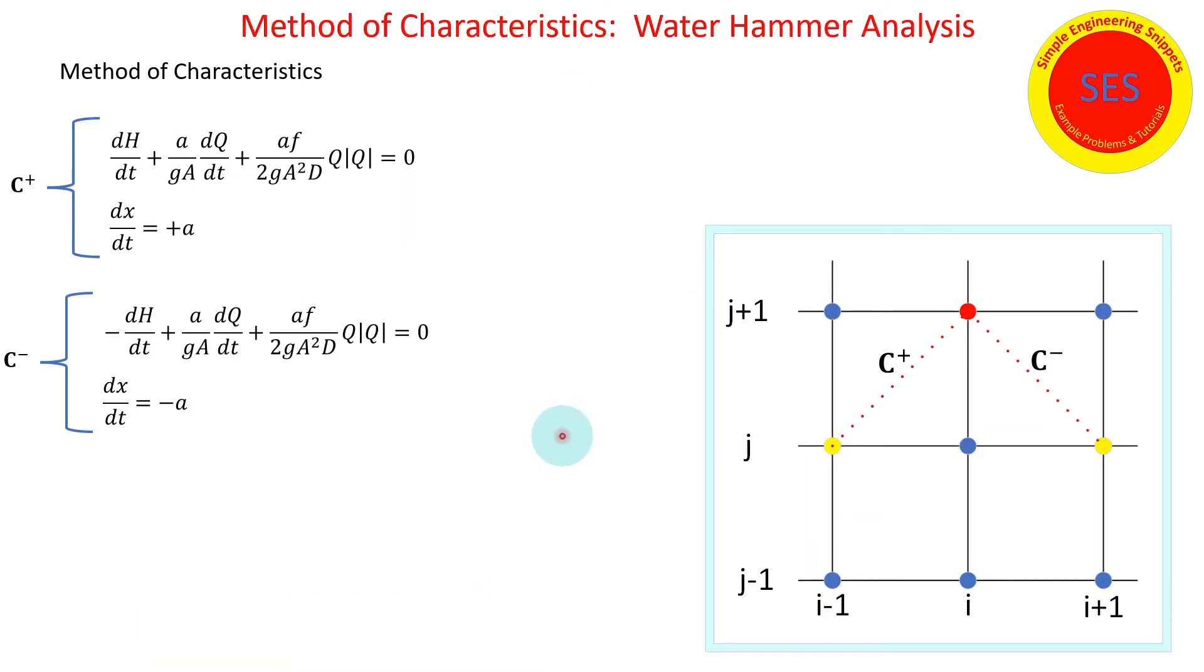Now the question is does the method of characteristics accomplish the same thing. Things get a little bit more complex. I derived these equations from the method of characteristics in a separate video so I'm going to be glossing over that, but big picture is that we solve for the head and flow at an unknown time level.